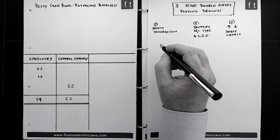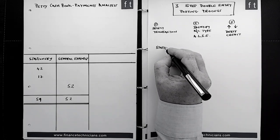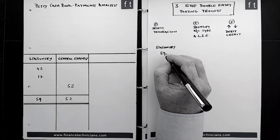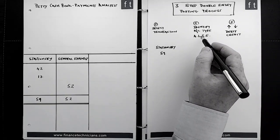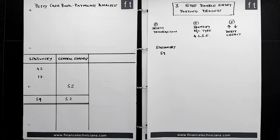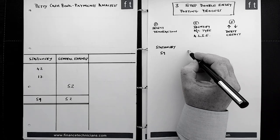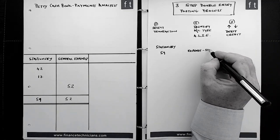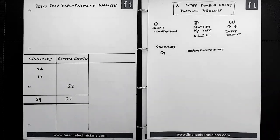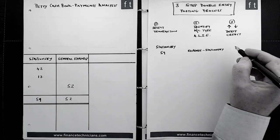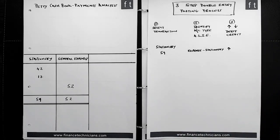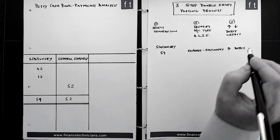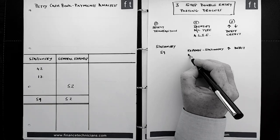We're going to select the first transaction, which is stationery, and the monetary value is 59. Now we need to figure out the account type — does it impact on an asset, liability, income, or expenditure account? The first account it impacts is going to be an expense account, because stationery is a day-to-day operational expense. Since we're incurring the expense, the value of that account is going to go up, and to increase an expense account we record the transaction as a debit.